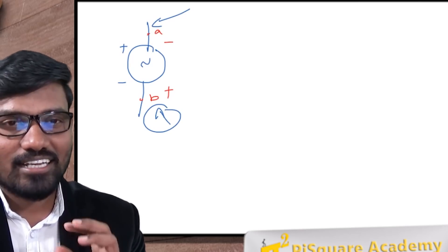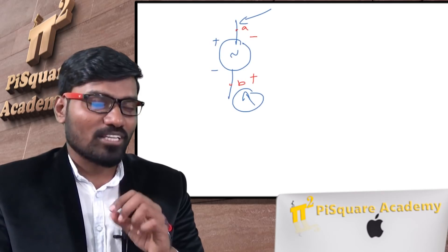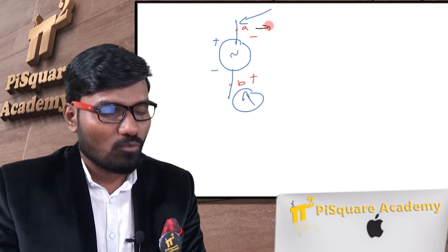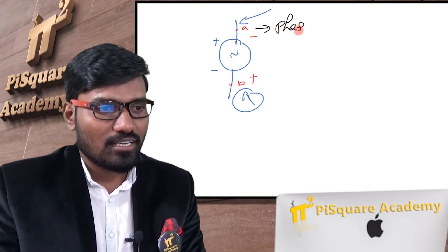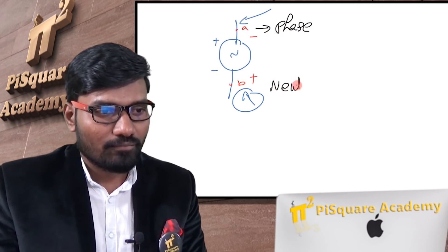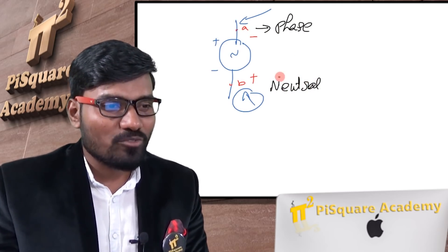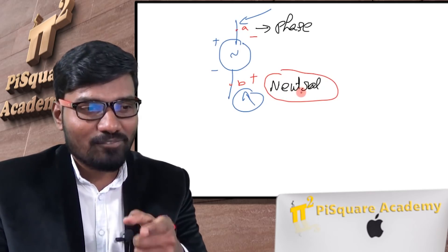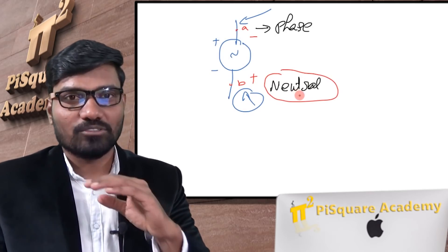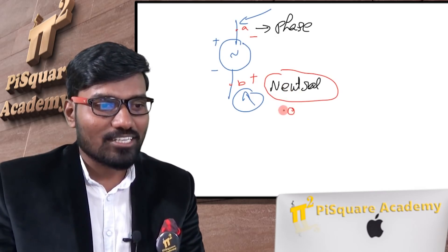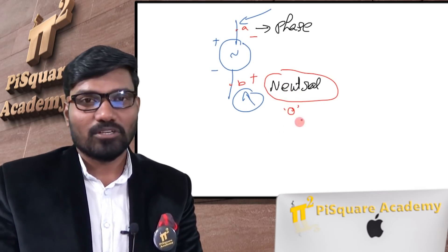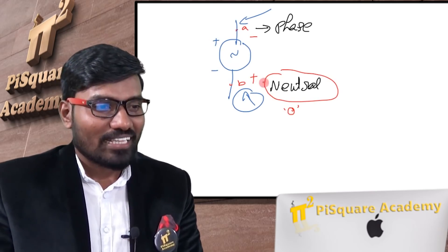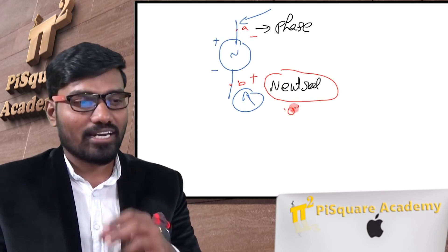Coming to the answer: we call one point the phase and another point the neutral. The name itself is very clear — neutral means it is neither positive nor negative. It has zero potential. So representing it as plus/minus or minus/plus is wrong. Neutral means neither positive nor negative — zero potential.